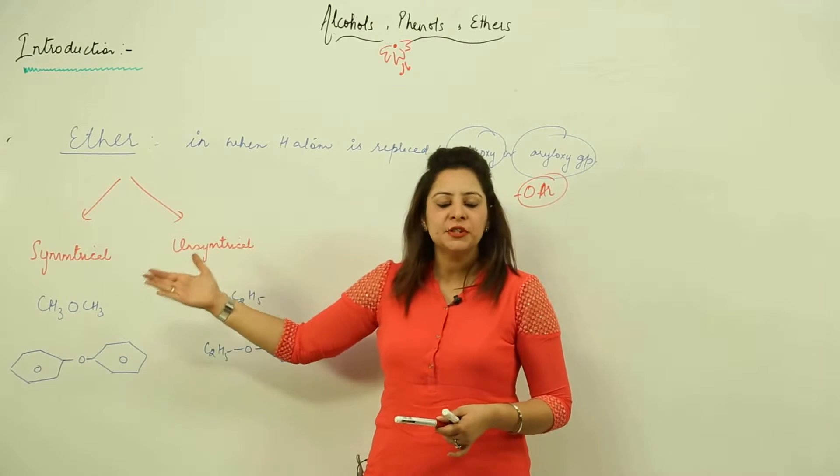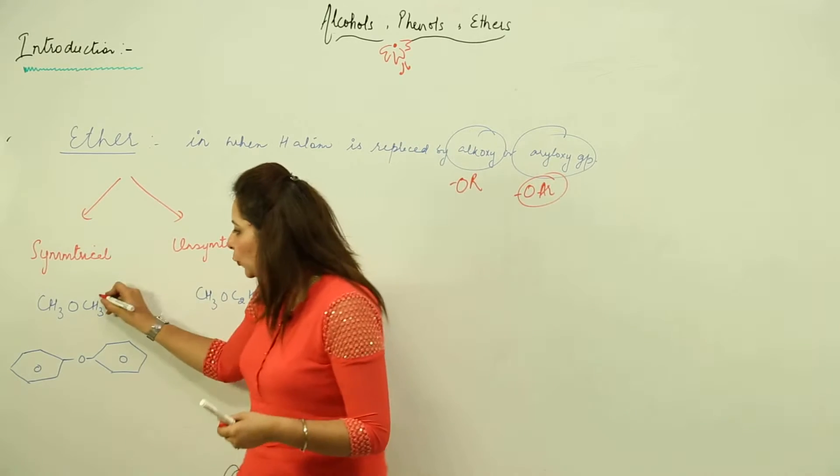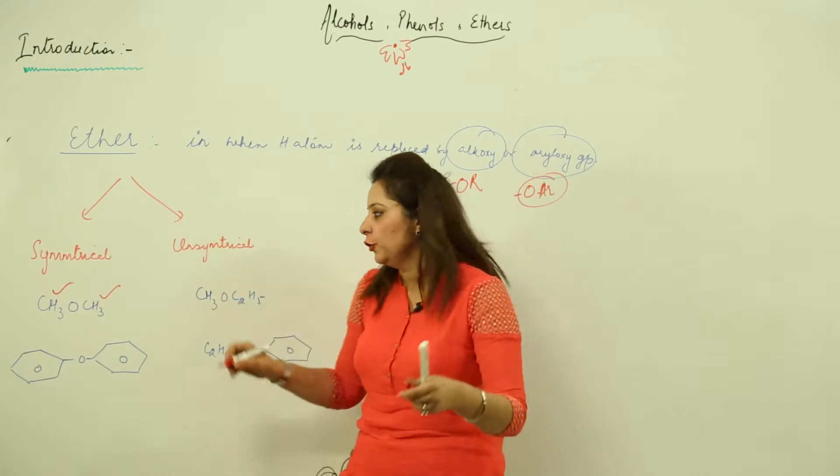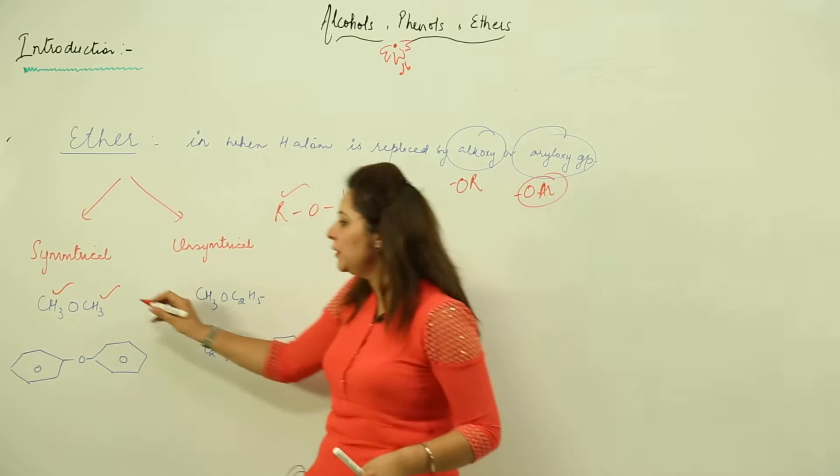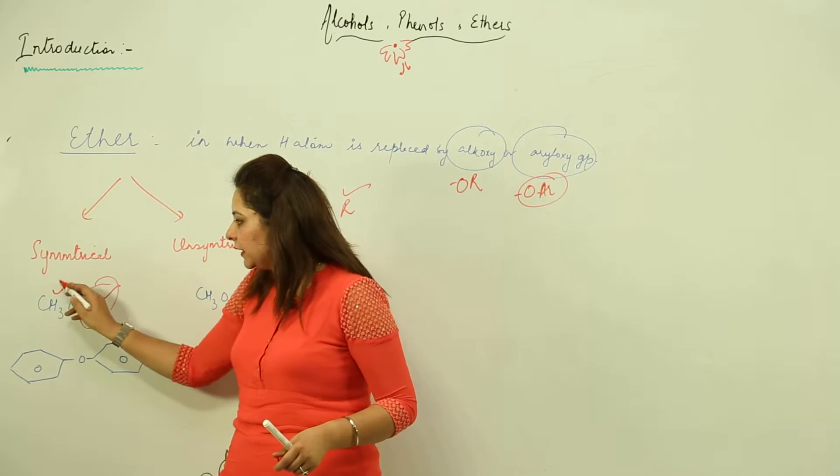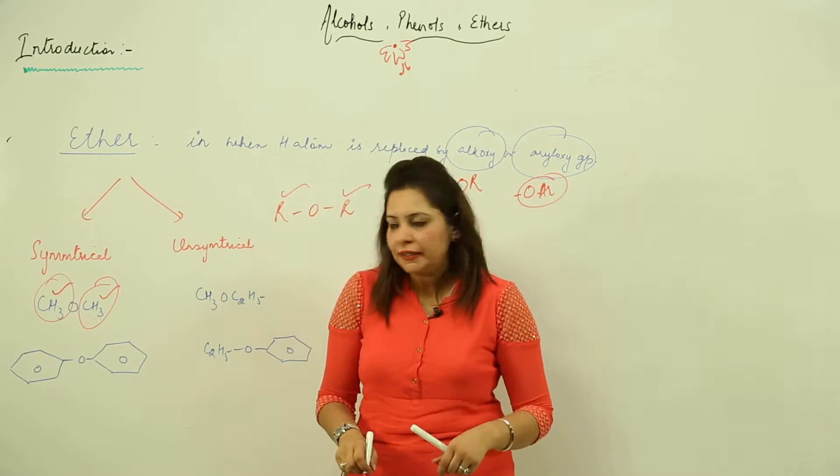What is actually a symmetrical ether? A symmetrical ether is one in which the two groups present on either side of the functional group. As we know, we have this ROR, in which these R groups are similar to each other. As you can see, this is methyl, this is methyl. So it belongs to the category of symmetrical ether.